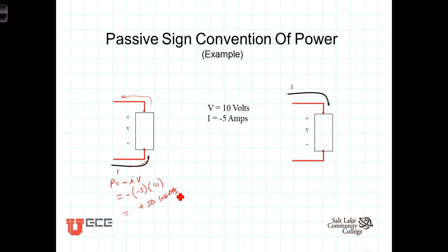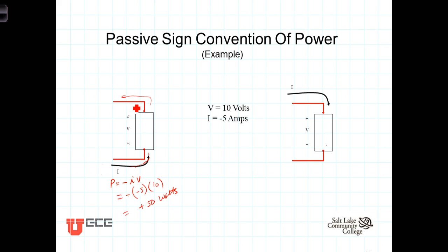Given these measured voltage and current values, we get positive 50 watts. This device would actually be functioning as a load, even though our choice of reference for the current suggested it was referenced as a source. When we measured the current, we found the actual charge wasn't going into the negative terminal — it was coming out the negative terminal or going into the positive terminal. That's what happens with a load, so the positive 50 watts tells us this device is, in fact, acting as a load.